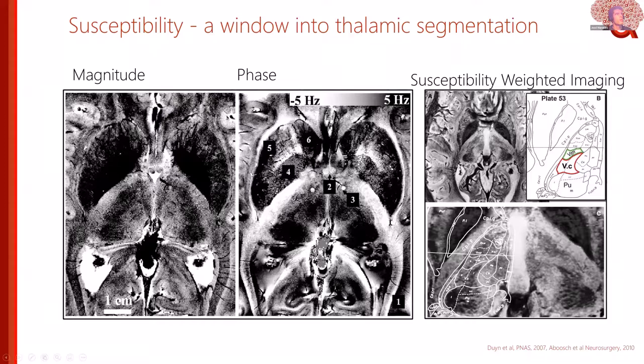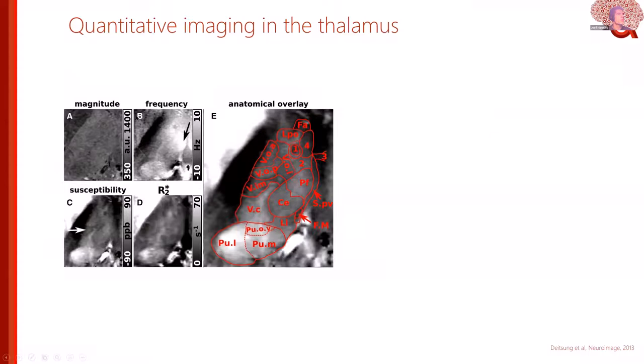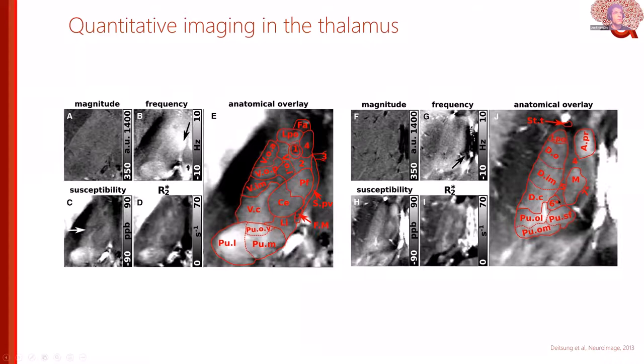What made things more interesting — addressing the bias problem — was work by Andreas Deistung showing that if you look not just at the magnitude and phase images but at QSM maps and R2* maps, you can start seeing structures like the internal medullary lamina of the thalamus and the pulvinar. These are visible on R2* maps and, more surprisingly, are also visible consistently across subjects.